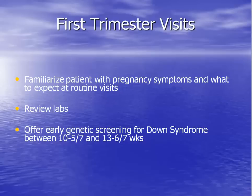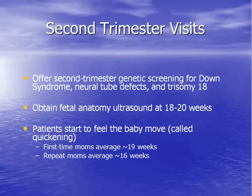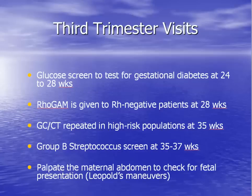First trimester aneuploidy screening consists of an ultrasound of the fetus and blood work. Routine tests ordered during the second trimester include the quad screen for Down syndrome, neural tube defects, and trisomy 18, and a fetal anatomy ultrasound at 18 to 20 weeks. Patients also start feeling the baby's movements for the first time — this is called quickening. Testing obtained in the third trimester is listed here.